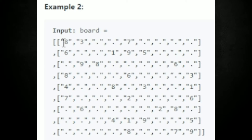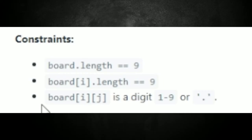We have this column right here, and it's not meeting rule number two, so this will be false. We know that the length of the row would be nine and the length of the columns will be nine. The digits in the boxes will have either one through nine or a period, with the period meaning an empty space.